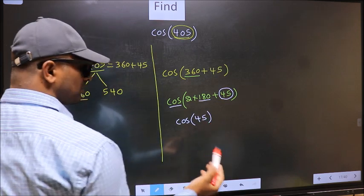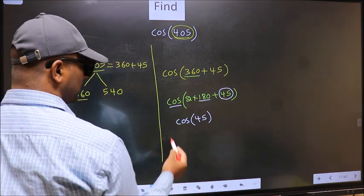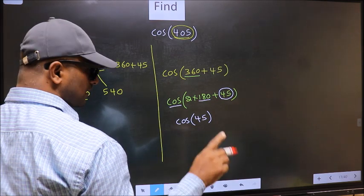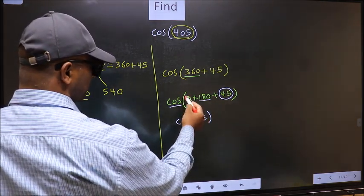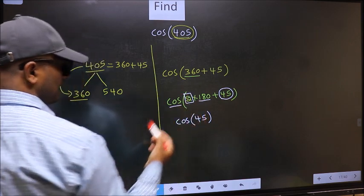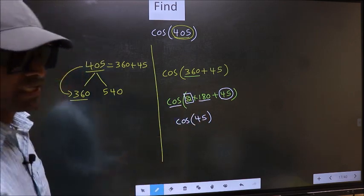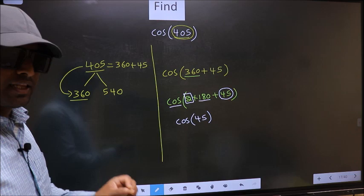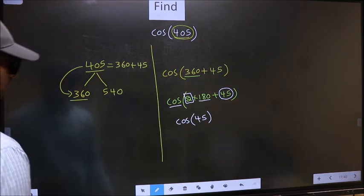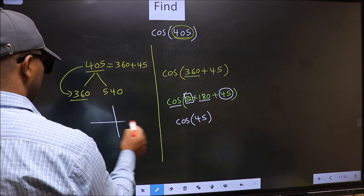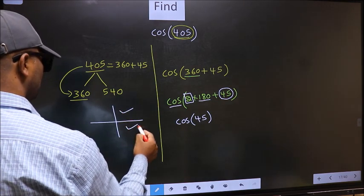Now, the question is, will we get here plus or minus? To answer that, we should look at the number before 180. That is 2. And 2 is even. And all the even multiples of 180, they lie in either the first or the fourth quadrant.